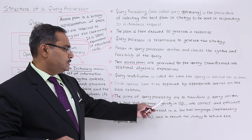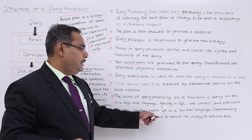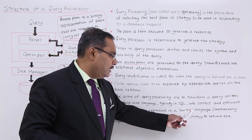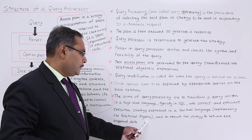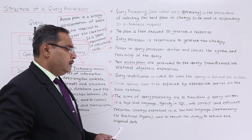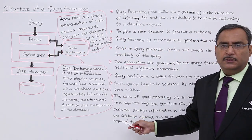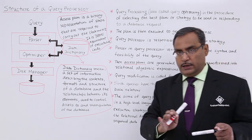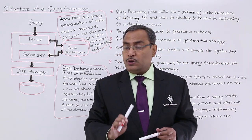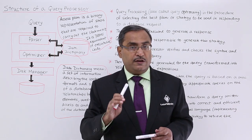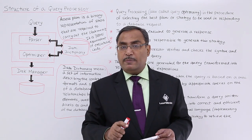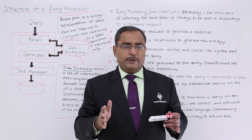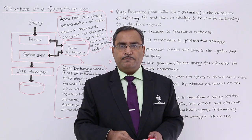The aim of query processing is to transform a query written in a high-level language, typically SQL, into a correct and efficient execution strategy expressed in a low-level language implementing relational algebra, and to execute the strategy to retrieve the required data. After this discussion, we have a clear idea of what query processing is, its structure, the steps involved, and how the query optimizer works. In the next videos, we will cover different case studies and examples as a continuation of this topic.